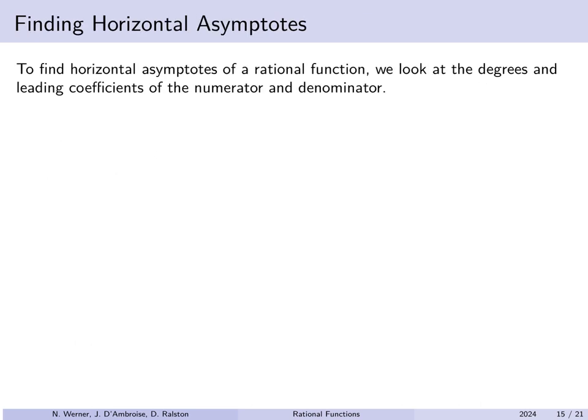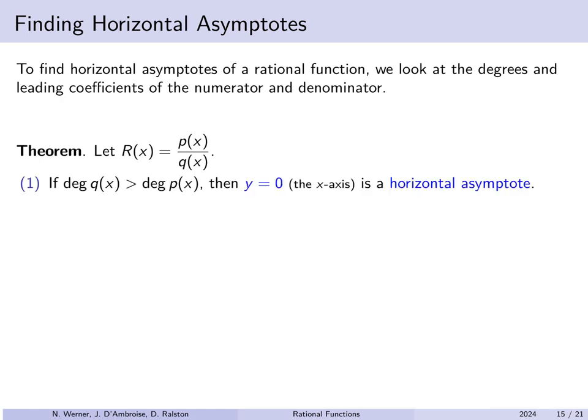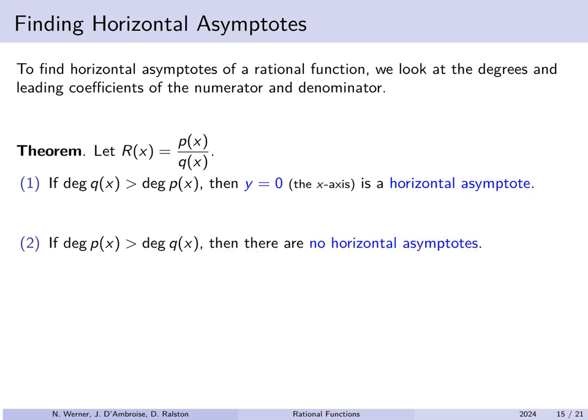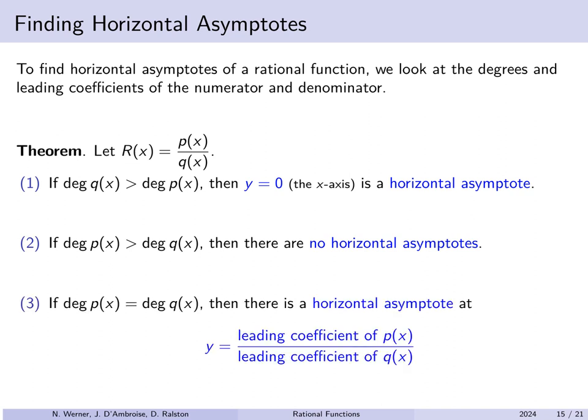To find horizontal asymptotes of a rational function, we look at the degrees and leading coefficients of the numerator and denominator. If the degree of the denominator q is strictly bigger than the degree of the numerator p, then y equals 0 is the only horizontal asymptote. If the degree of the numerator p is strictly bigger than the degree of the denominator q, there are no horizontal asymptotes. If the degrees of numerator and denominator are equal, then there is a horizontal asymptote given by y equals the ratio of the leading coefficients of the numerator and denominator respectively.